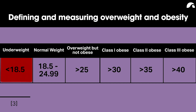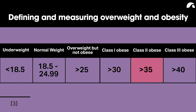The table gives the classification: if you're underweight, BMI is less than 18.5. Normal weight is 18.5 to 24.99. Overweight — starting to worry — is just above 25. When you reach 30, it is classified as Class 1 obese; above 35 is Class 2 obese; and Class 3 is over 40.